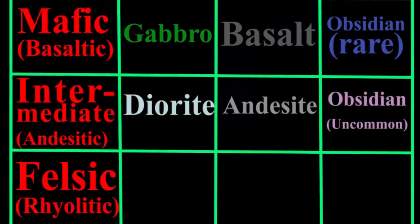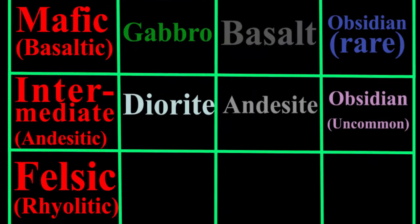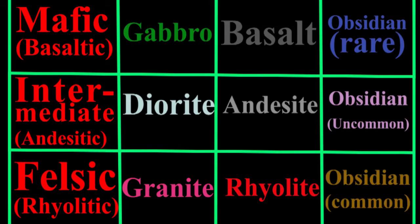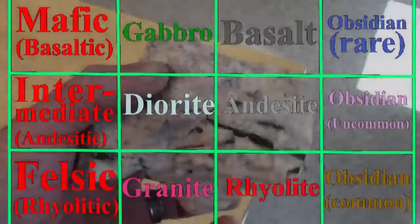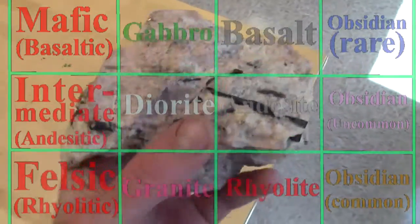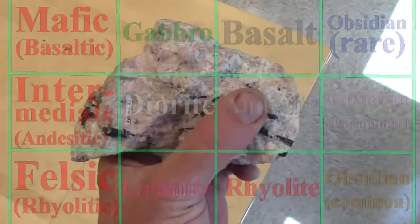We use the adjectives porphyritic and vesicular before the name of the smallest crystal size in the rock, and we use the phaneritic name followed by 'pegmatite' for the really large crystals. This is an example of a granite pegmatite.